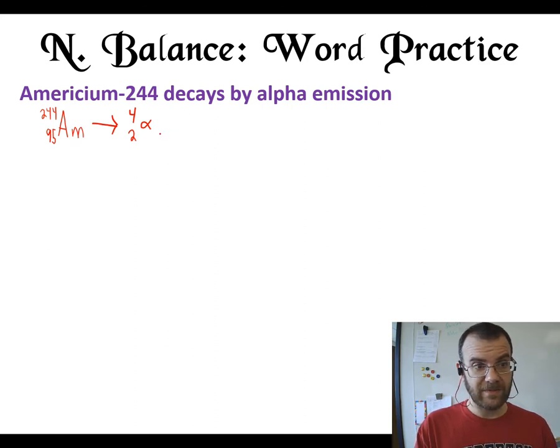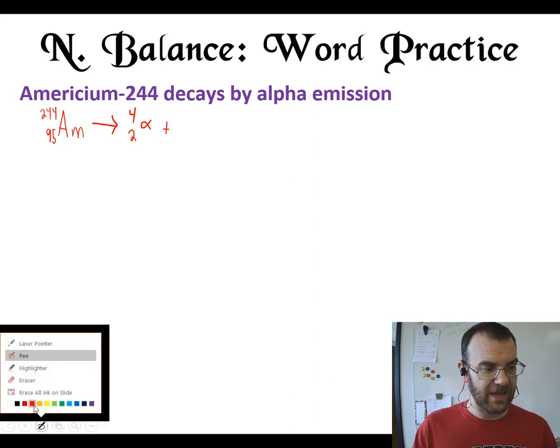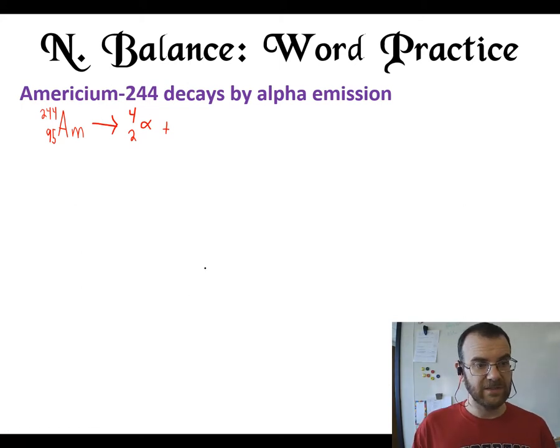Now we're then going to have something else that appears here because we need to have our top numbers match and our bottom numbers match. So we need all these top numbers to equal and we need these bottom numbers to equal. So we've got 244 on one side, 4 on the other which means what is missing is 240.